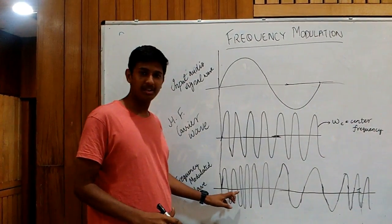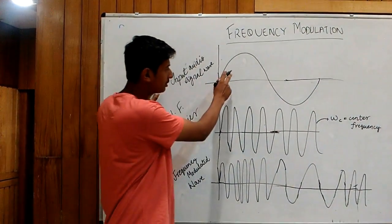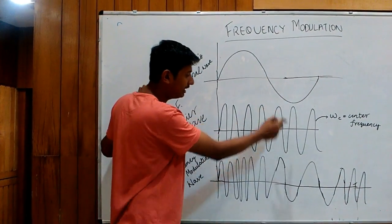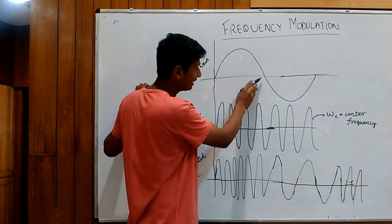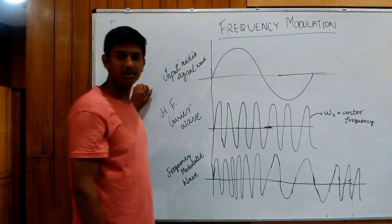The frequency of the frequency modulated wave varies in proportion to the amplitude of the input wave. At the maximum of the input wave, we have the frequency of FM wave as maximum. At the valley, it is minimum. And when the amplitude of the input wave is zero, the frequency of the FM wave is known as the center frequency.